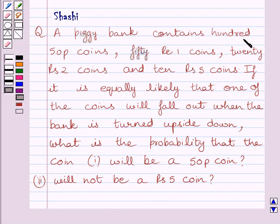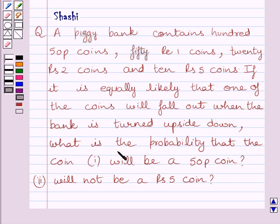A piggy bank contains 150 Pesa coins, 50 Rupees 1 coins, 20 Rupees 2 coins, and 10 Rupees 5 coins. If it is equally likely that one of the coins will fall out when the bank is turned upside down, what is the probability that the coin will be a 50 Pesa coin? The second part is: what is the probability that the coin will not be a Rupees 5 coin?